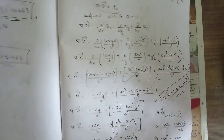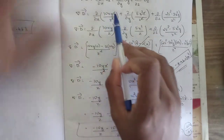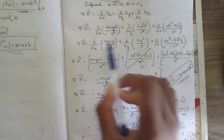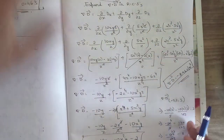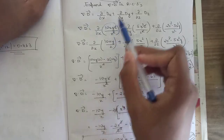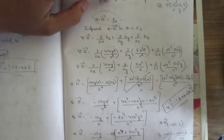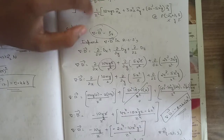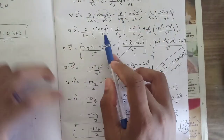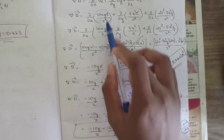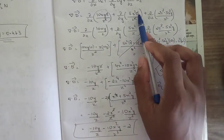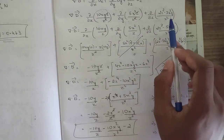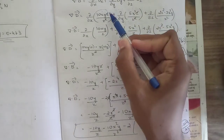Expanding del·D in the rectangular coordinate system: ∂/∂x(Dx) + ∂/∂y(Dy) + ∂/∂z(Dz). Substituting the component values: Dx = 10xyz/z², Dy = 5x²z/z², Dz = (2z³ - 5x²y)/z². Note that z terms cancel in Dx and Dy.